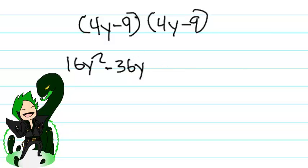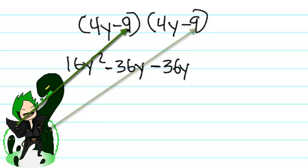Now we do the same thing but multiply with the second factor of the first expression, which is negative 9. Negative 9 multiplied by 4y is negative 36y. And negative 9 multiplied by negative 9 is 81.